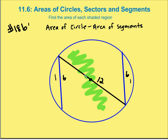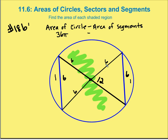We can figure out the area of the circle pretty quickly. I have a diameter of 12, so the radius is 6. The area of the circle is 36π (πr²). Now I need to find the area of the segments — that's the trickier part. I'm going to draw a radius from the center to the endpoint of the chord, and I end up with two equilateral triangles with a side length of 6. The area of each equilateral triangle with side length 6 is 9√3.